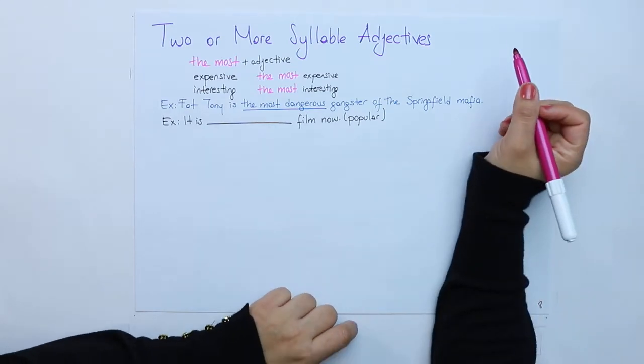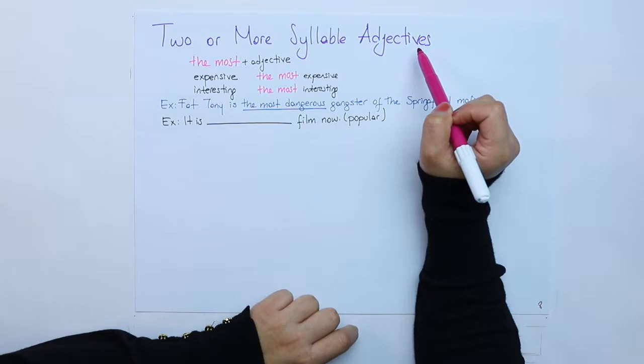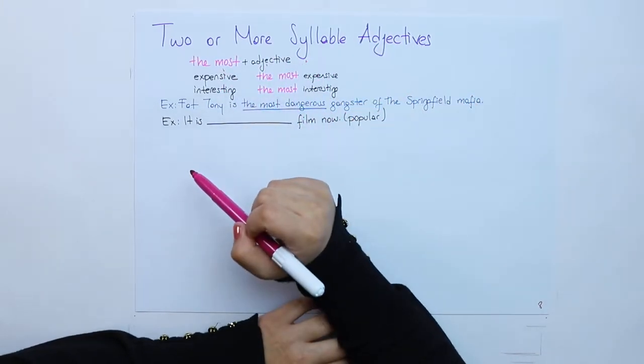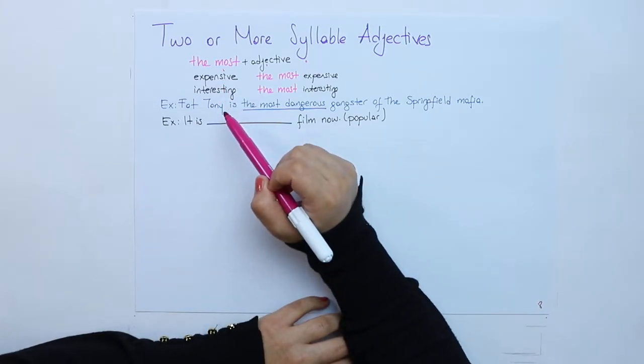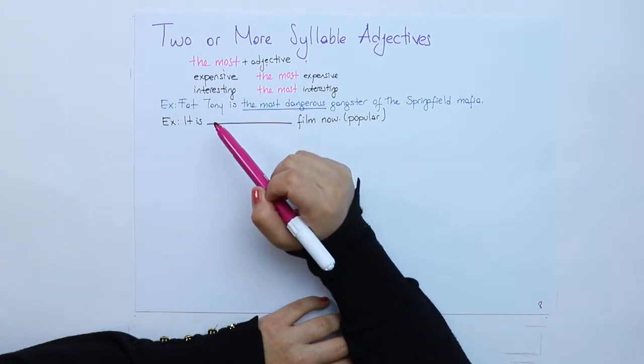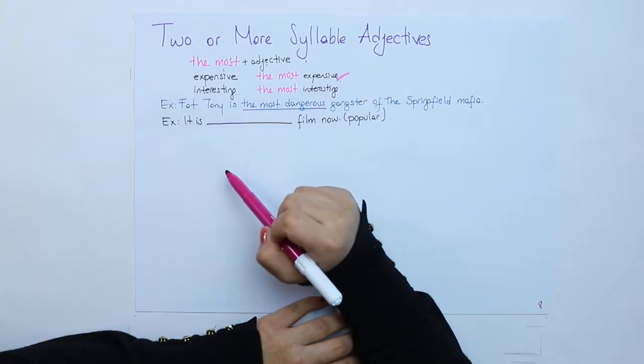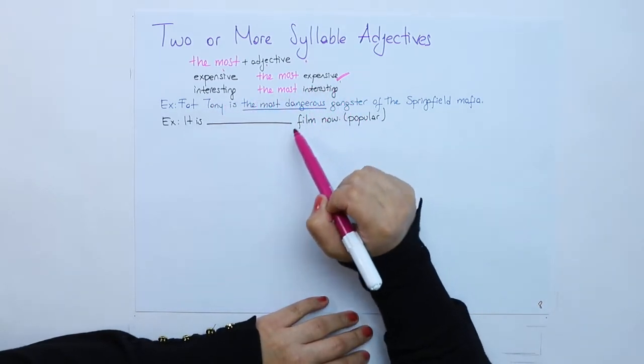If we move to two or more syllable adjectives, THE MOST plus adjective should be our order. Expensive has got three syllables, the most expensive, not other affixes. The most interesting.